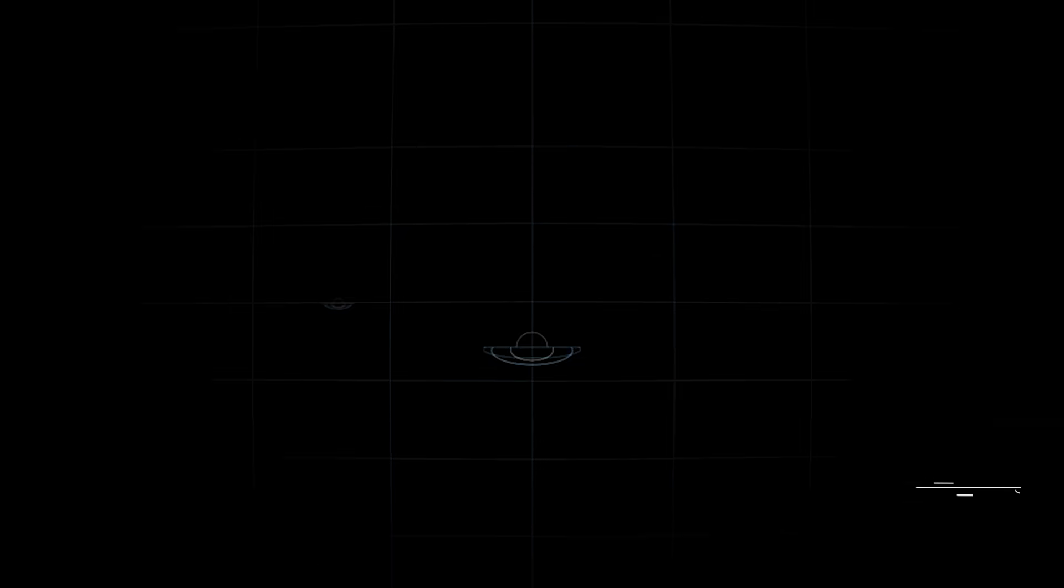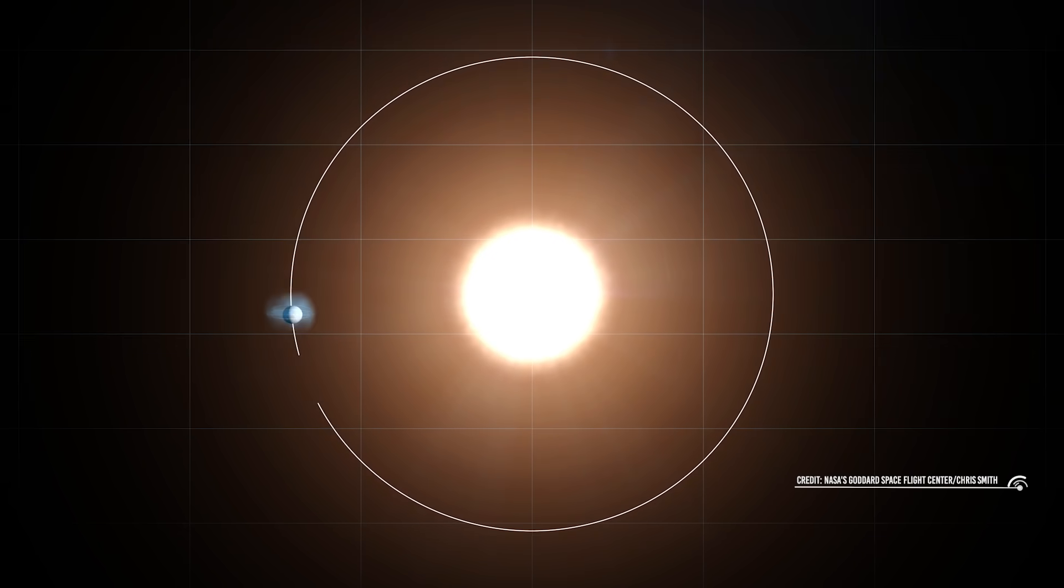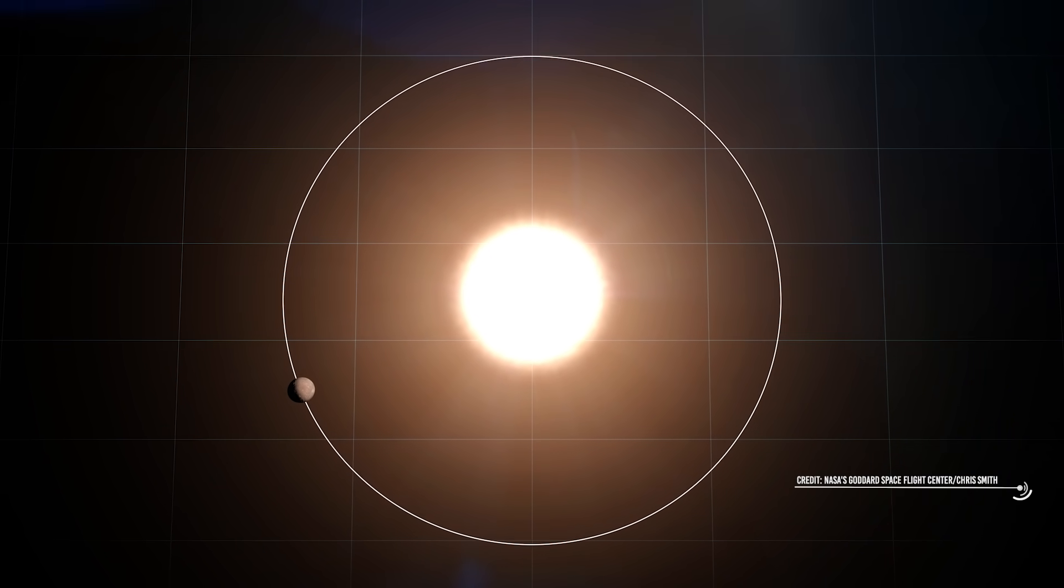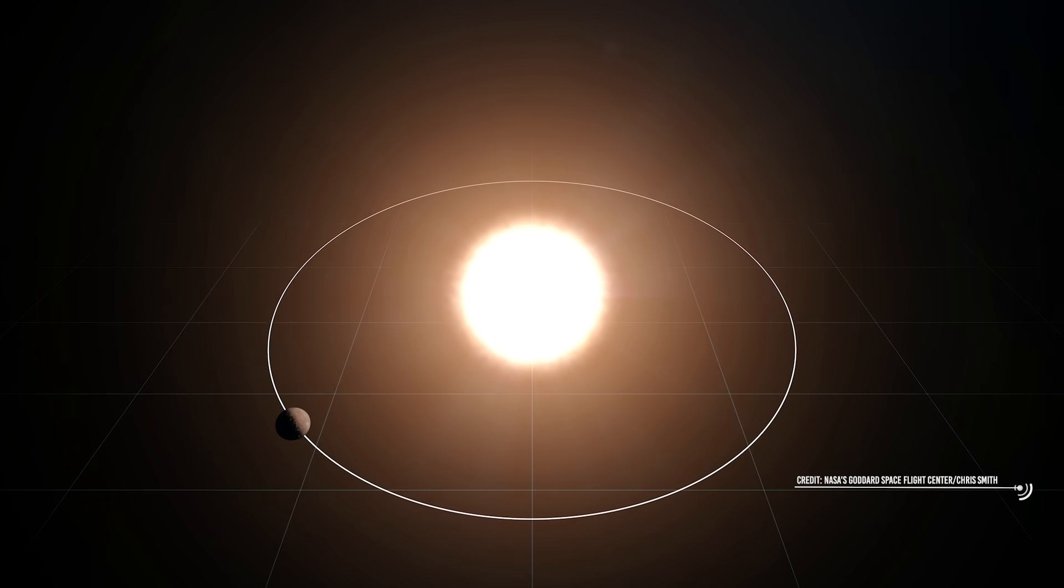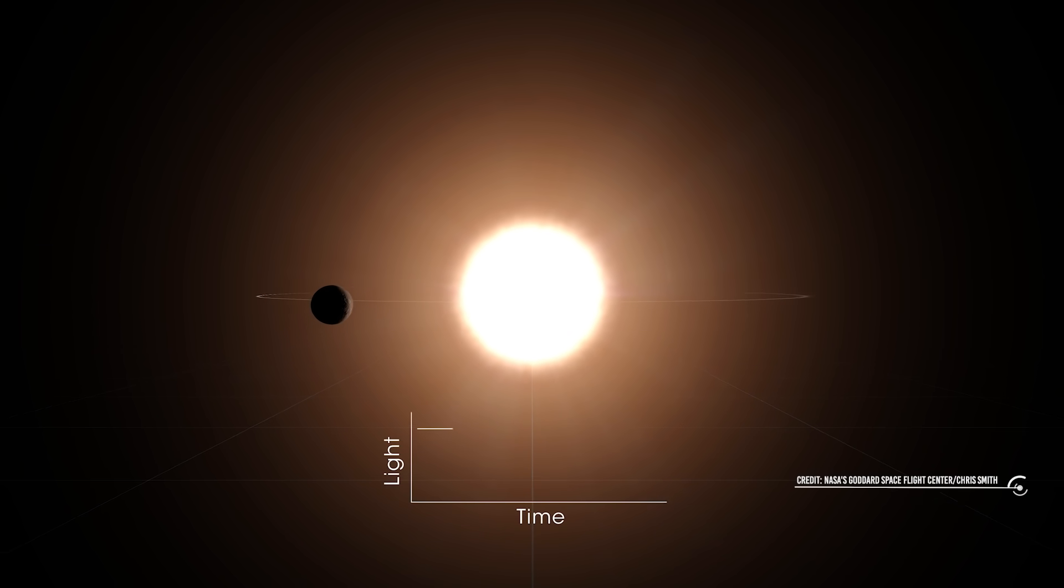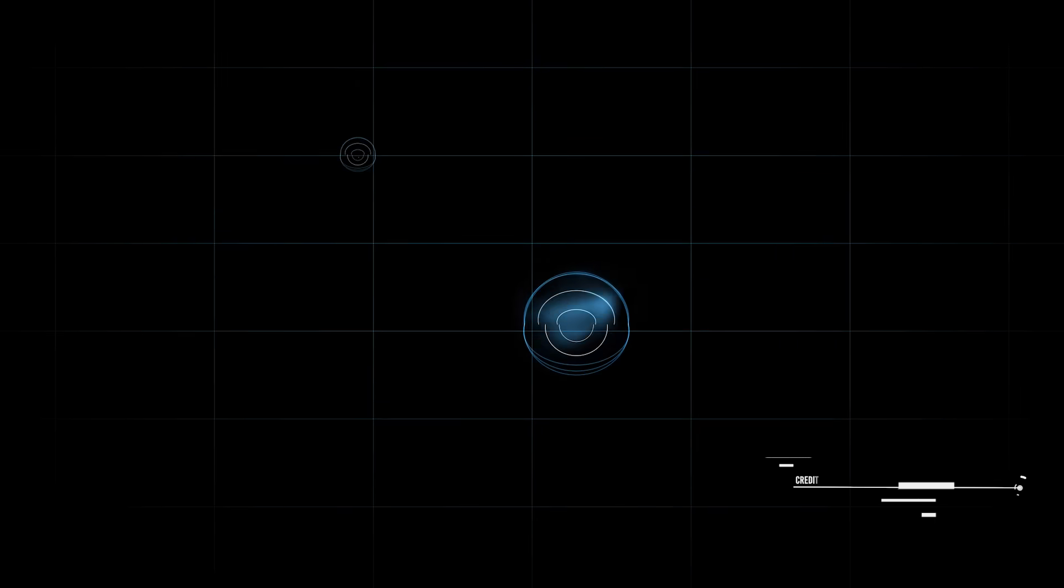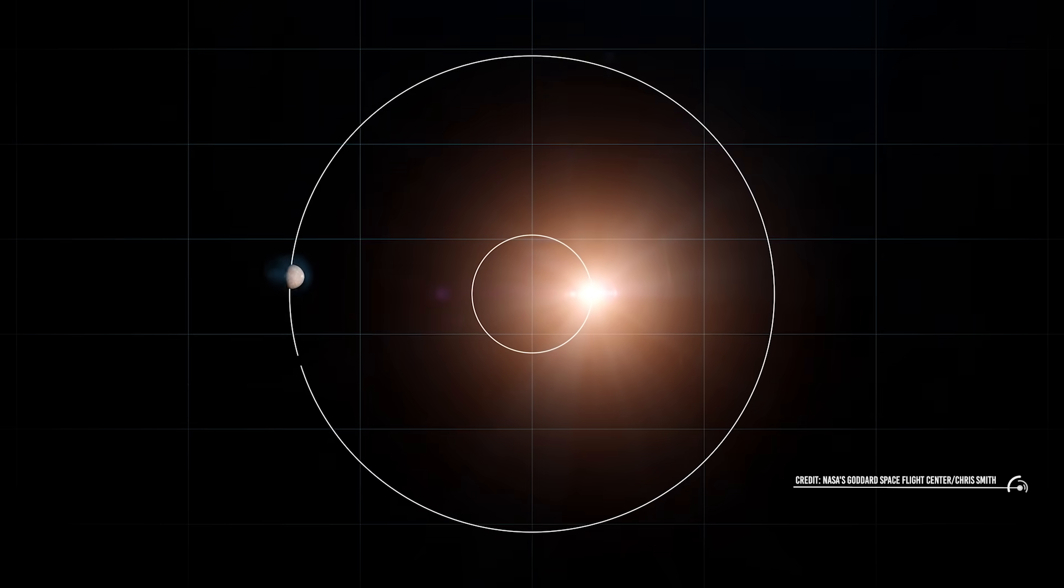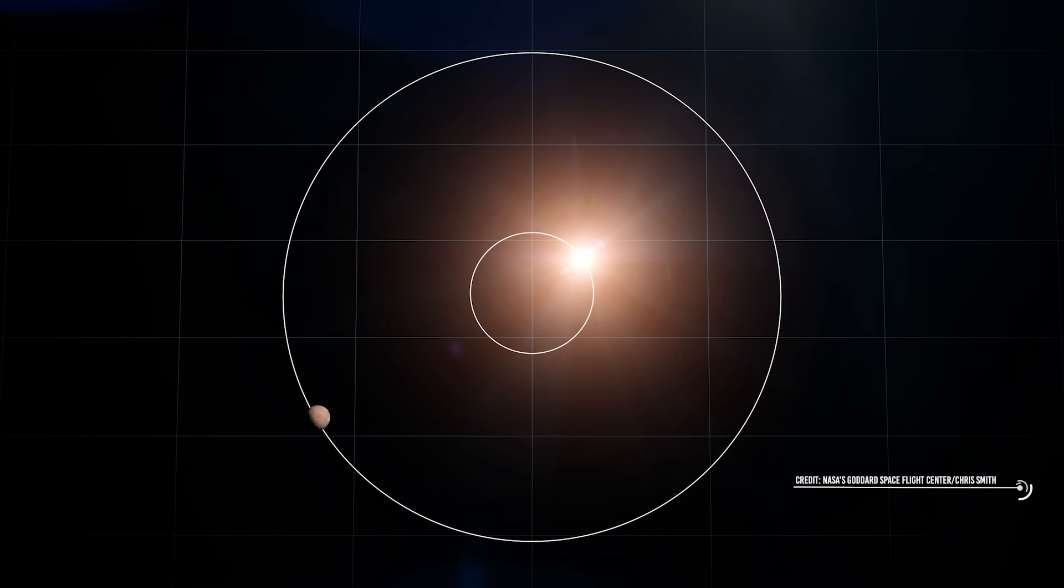If a transiting exoplanet itself has an orbiting companion, it will rotate around the mutual center of mass of the planet-moon system. In effect, if the invisible moon happens to be ahead of the exoplanet during a transit, its gravitational tug will pull the planet forward slightly, and the transit will begin a little earlier than expected, or conversely, hold it back. So precise measurements of the transit timing variations of an exoplanet can reveal the presence of an unseen exomoon.